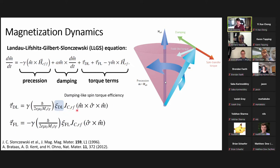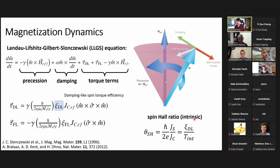Here I want to point out the damping-like spin torque efficiency, which is responsible for explaining the charge current being converted into a spin current. If we have a larger efficiency, a given charge current yields more spin current. There is also a more intrinsic measure called the spin Hall ratio — spin current over charge current — which accounts for the interfacial spin transparency. The spin Hall ratio represents the intrinsic material efficiency, while interfaces can cause the damping-like spin torque efficiency to be smaller.